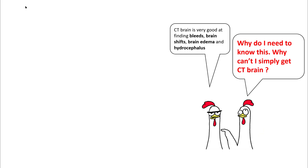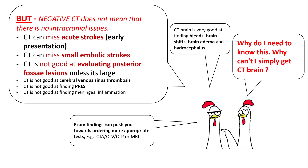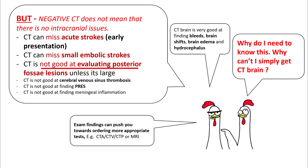A lot of us rely heavily on the CT scan of the brain to figure out our answers. CT scan is decent at finding brain bleeds, brain shift, brain edema, and hydrocephalus. However, it is not good at figuring out acute strokes early in presentation. It can miss small embolic strokes, and it's certainly not good at evaluating posterior fossa lesions. Good neurological exam findings can push you towards ordering more appropriate tests rather than a CT scan.